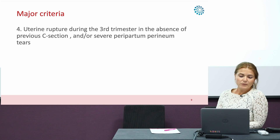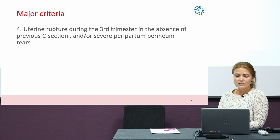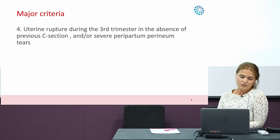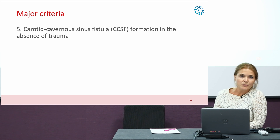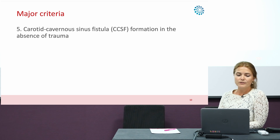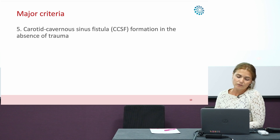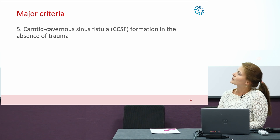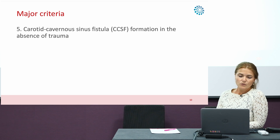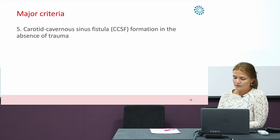The fourth major criterion is uterine rupture during the third trimester in the absence of caesarean section and/or severe peripartum perineal tears. The fifth major criterion, which is rather infrequent but very specific for vascular EDS, is carotid-cavernous sinus fistula formation in the absence of trauma.